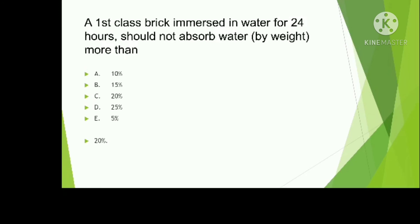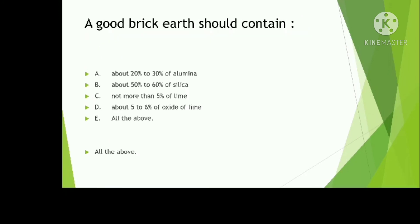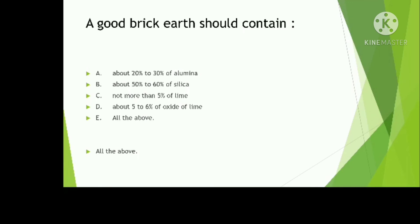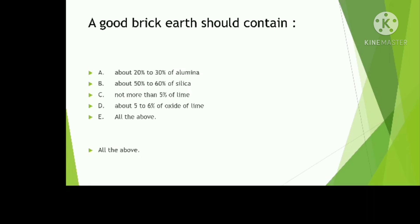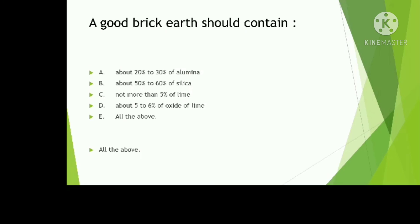You can comment the category-wise second and third class brick water absorption. A good brick earth should contain above 20 to 30 percent of alumina, above 50 to 60 percent of silica, not more than 5 percent of lime, oxide of iron — all of the above. The answer is all of the above.